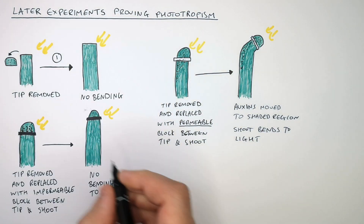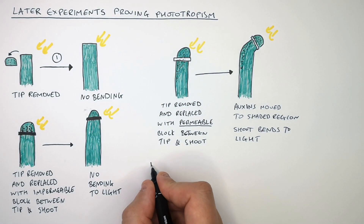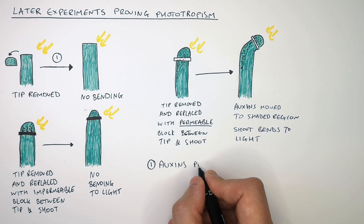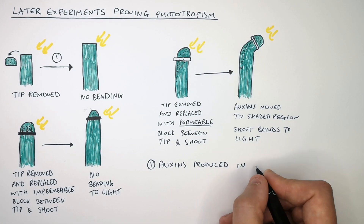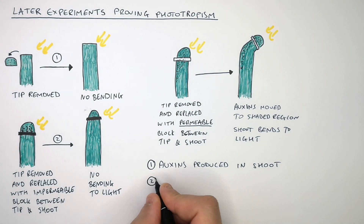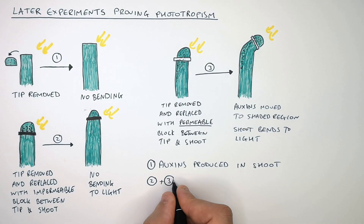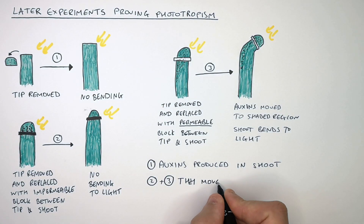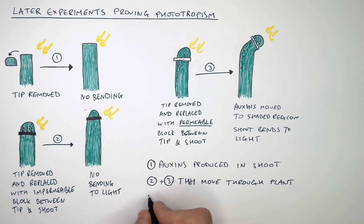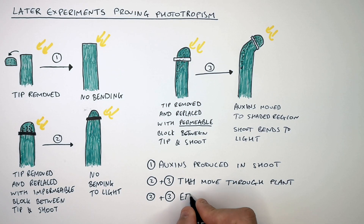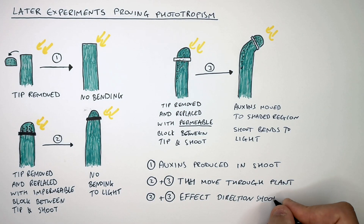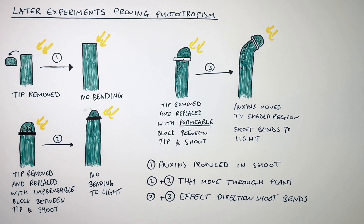So what did experiment 1 show us? That auxins are produced in the tip of the shoot. What did experiments 2 and 3 show us? They showed us that auxins move through the plant, and also how auxins affect the direction the shoot bends.